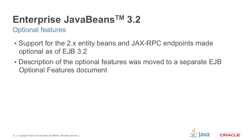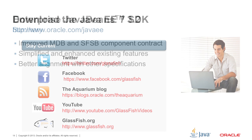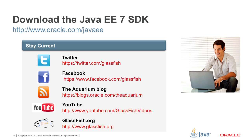In summary, this is what we did at a high level in this release of Enterprise JavaBeans. We improved the component contract for message-driven and stateful session beans, simplified and enhanced existing features, made some features optional, and better aligned with other specifications. Try it out yourself, let us know, follow us on Twitter and Facebook, download the SDK, and file bugs if we missed anything — both in the implementation and in the spec.